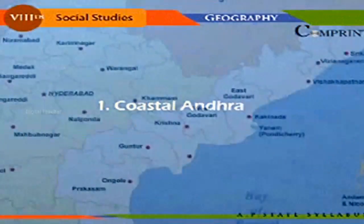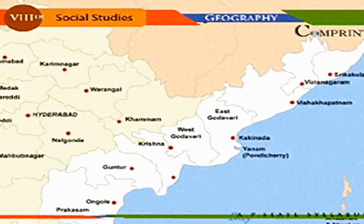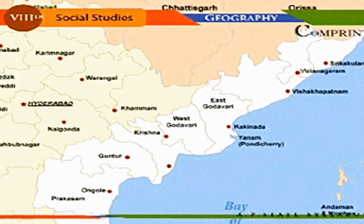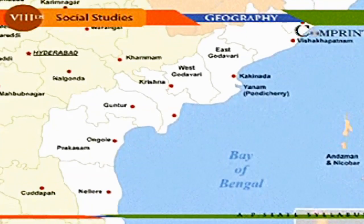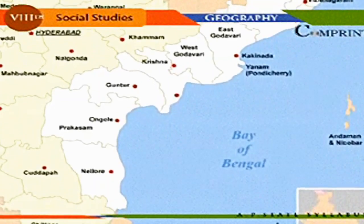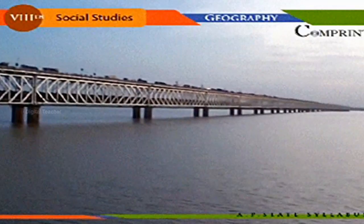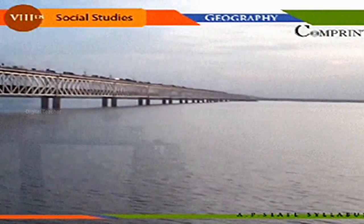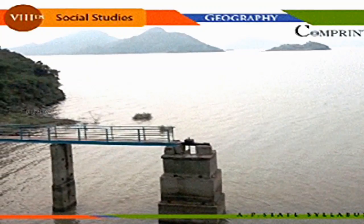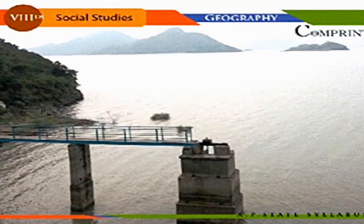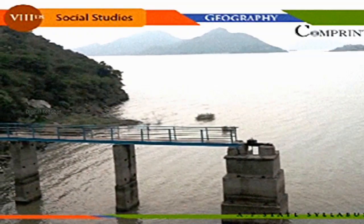Coastal Andhra. There are 9 districts in the Coastal Andhra region. They are Srikakulam, Vijayanagaram, Vishakapatnam, East Godavari, West Godavari, Krishna, Guntur, Prakasham, and Nellore. This region has the fertile deltas of the rivers Godavari, Krishna, and Penna. The major portion of food and commercial crops grown in Andhra Pradesh are from this region. Hence, the Coastal Andhra region is known as the granary of South India.